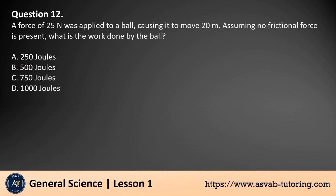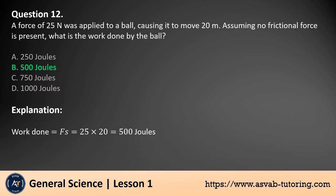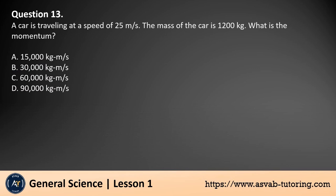Question 12. A force of 25 newtons was applied to a ball, causing it to move 20 meters. Assuming no frictional force is present, what is the work done by the ball? a. 250 joules. b. 500 joules. c. 750 joules. d. 1000 joules. The answer is b. Work done is equal to force times distance moved. Therefore, the work done is 500 joules.